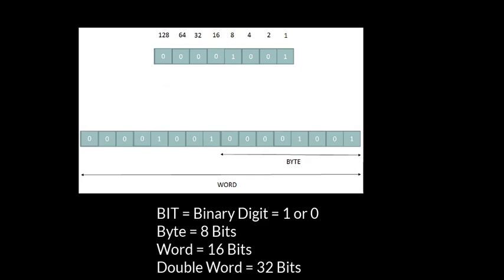A bit is the smallest unit of data on a computer. A bit has a single binary value, either 0 or 1. A byte is made up of 8 bits, and a word is made up of 16 bits.